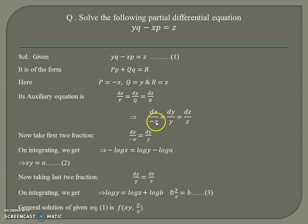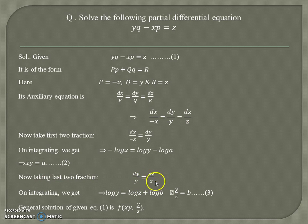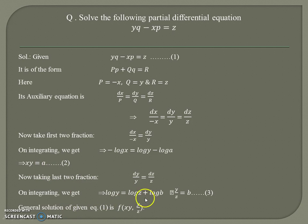We select two fractions to find the solution easily. Taking the first two fractions — dx/(−x) = dy/y — and integrating, we get xy = a. Taking the last two fractions — dy/y = dz/z — and integrating, we get y/z = b. The required general solution is therefore f(xy, y/z) = 0, where xy is the first solution and y/z is the second solution.